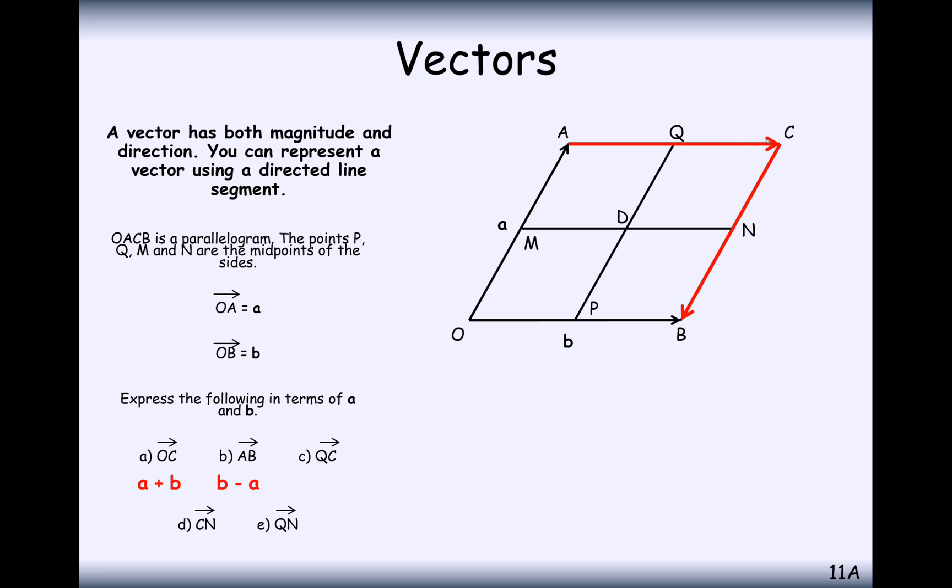This time from Q to C. Remember this whole bottom line is b, so the whole top line is b. And if Q is the midpoint, then Q to C must be half of vector b. You can half or third or take a fraction of any of your vectors if it works.